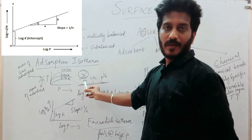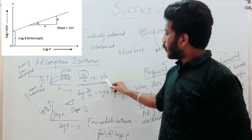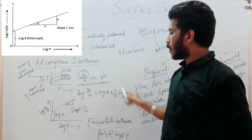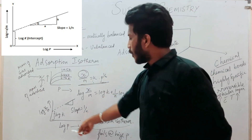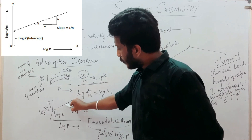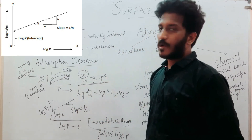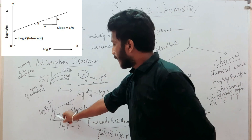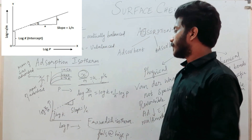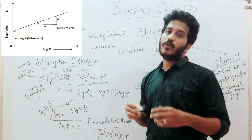Taking logarithm of both sides: log of x by m equals log k plus 1 by n times log p. Using the logarithmic rule, if you plot log(x/m) versus log(p), you get a straight line. The slope is 1 by n, and the intercept is log k. From this graph you can get the values related to adsorption.